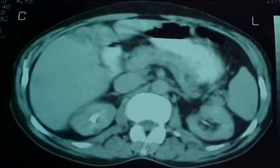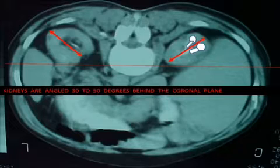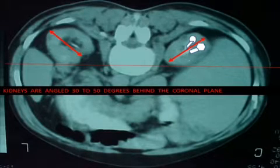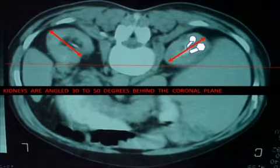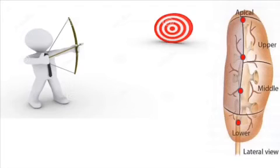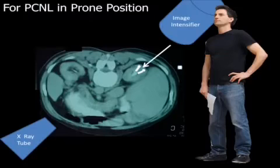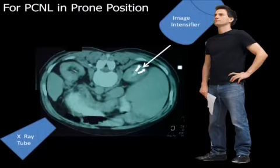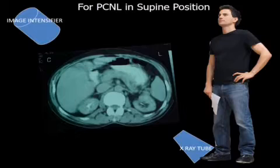Assuming the patient is supine, when turned prone you can identify the posterior calyx and the anterior calyx as our target. Once you have the target in mind, you should always see the target face-on. To do this, you have to tilt the image intensifier 30 degrees toward you — with the image intensifier almost hitting your head.